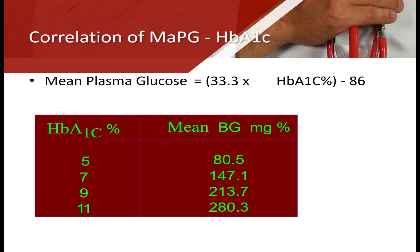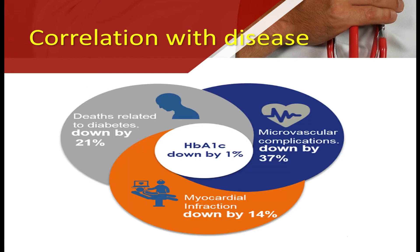How to calculate mean plasma glucose level? Mean plasma glucose is calculated using the formula: 33.3 × HbA1c level minus 86. This gives an approximate blood sugar value according to HbA1c level. Regarding correlation with disease: when you reduce HbA1c by 1%, death related to diabetes decreases by 21%, microvascular complications decrease by 27%, and myocardial infarction decreases by 14%.